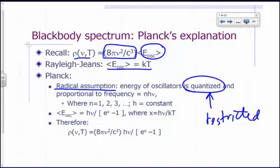According to Planck, you can explain the blackbody spectrum if you assume that the energy of oscillators is quantized and proportional to the frequency. He said it's equal to some constant h times the frequency ν, and it's a multiple of that.